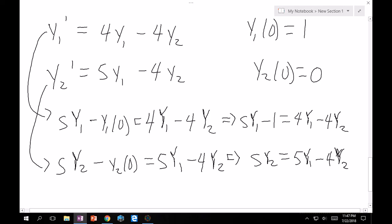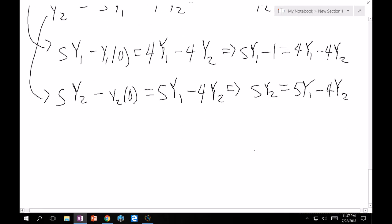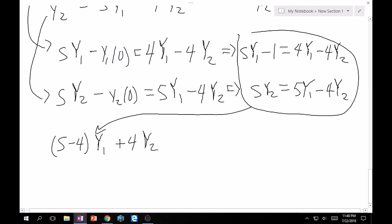Applying your initial conditions, s big y1 minus 1 is equal to 4 big y1 minus 4 big y2. And then, same here, s y2 minus 0, so that's just s y2, is equal to 5y1 minus 4y2. I'm trying really hard to make these big, because I know they can look tiny, as in it looks like we didn't take Laplace transform, but we did. Going off of what we have here now, we put it back into a system. Top equation becomes s minus 4 times y1 plus 4y2 is equal to 1. And then, the bottom equation becomes minus 5y1 plus quantity s plus 4 times y2 is equal to 0.